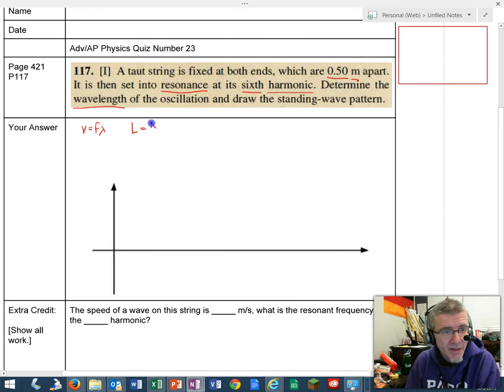L equals N over 2 times lambda. So the length of the string has to contain N half wavelengths. We talked about this in the video. In this case, N equals 6. It's the sixth harmonic.